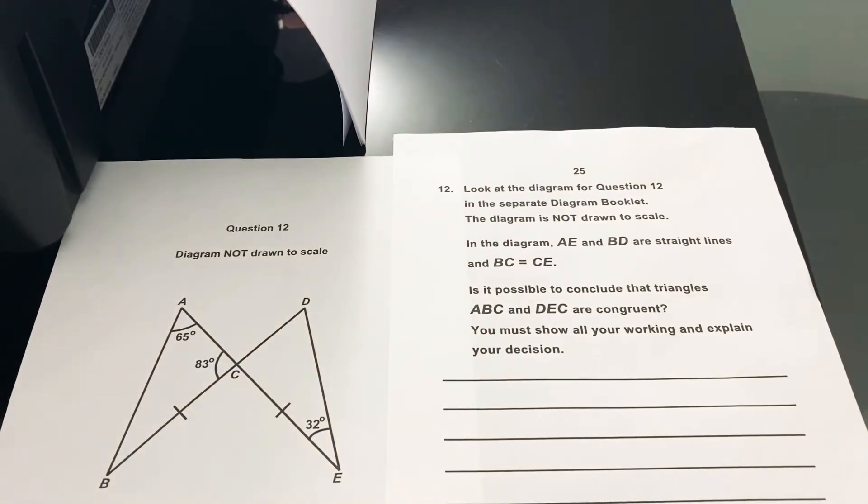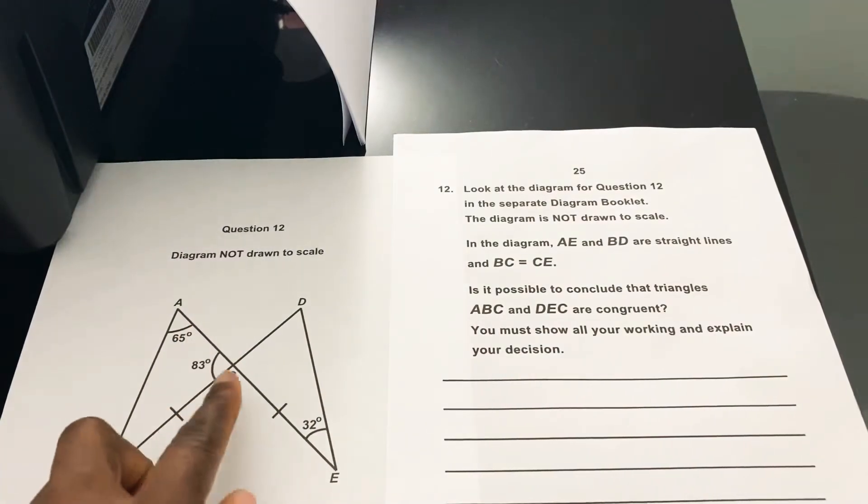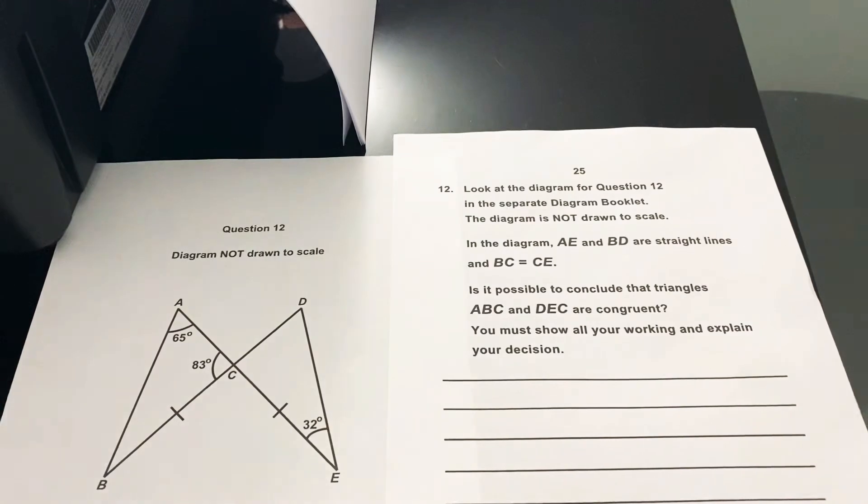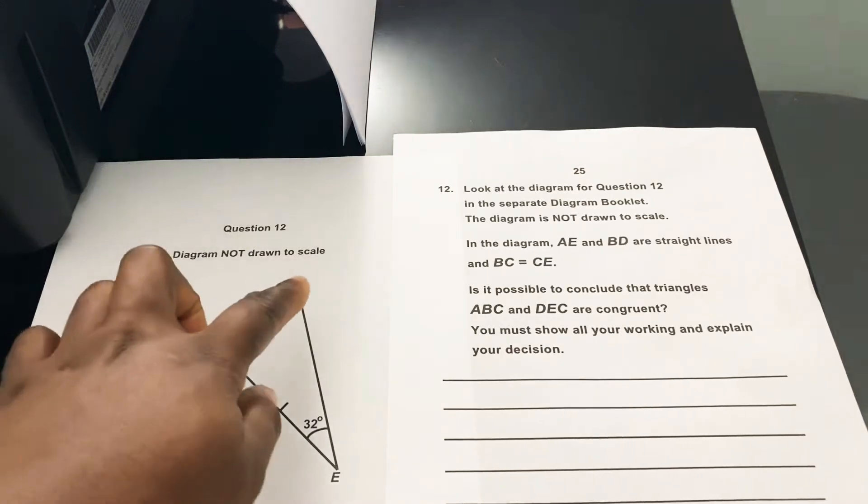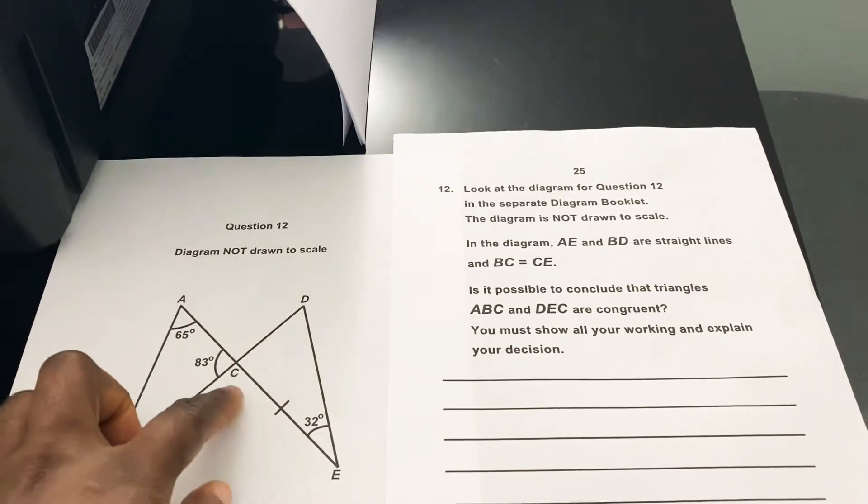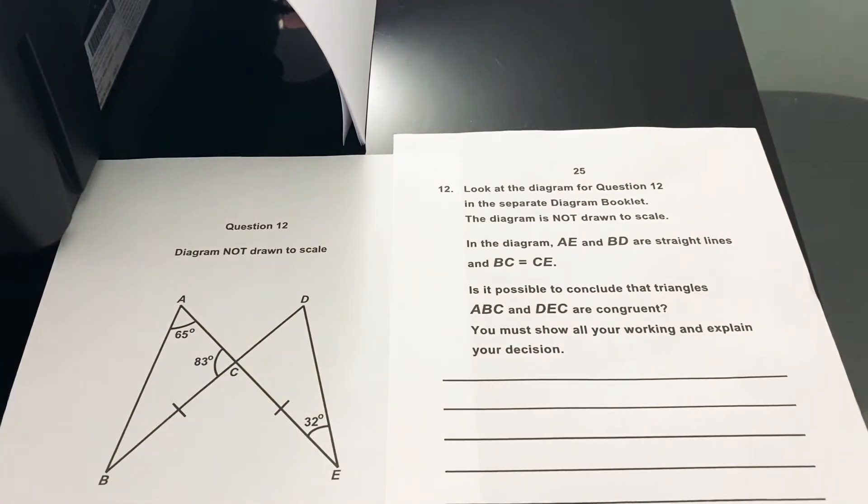AE and BD are straight lines, and BC is equal to CE. Is it possible to conclude that triangles ABC and DEC are congruent? You must show all your workings and explain your decision.